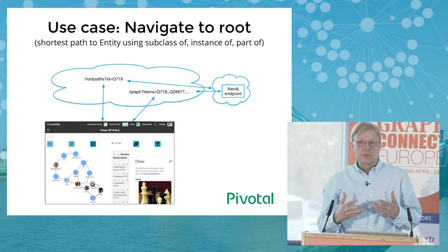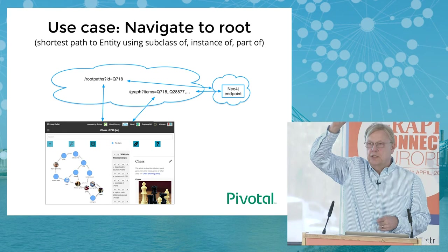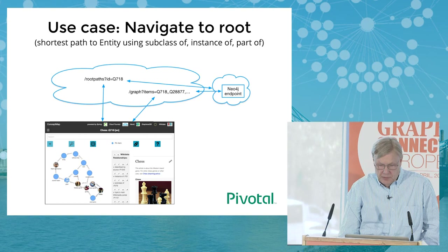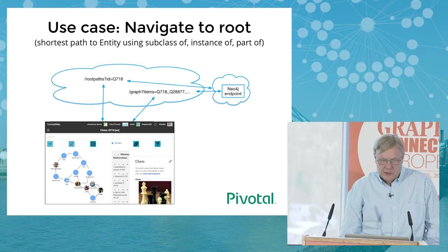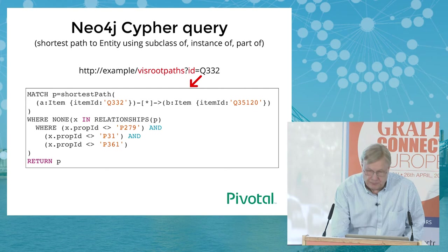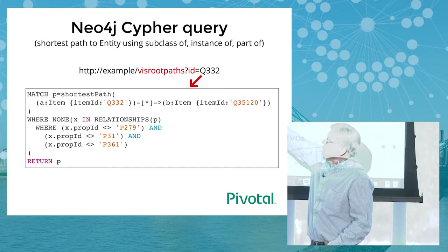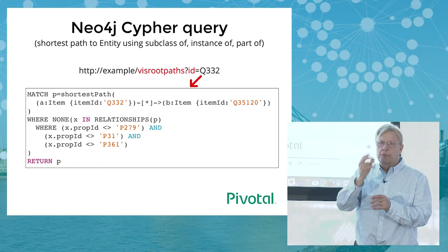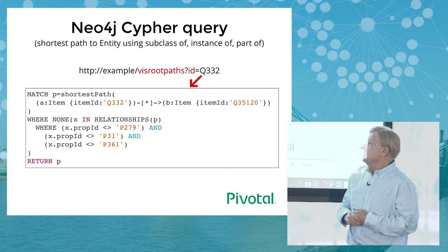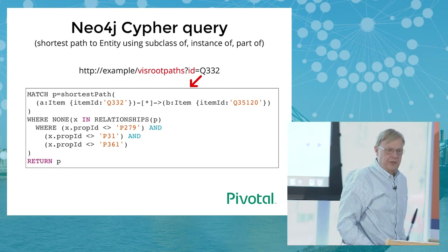The Neo4j Cypher query for 'items in common' runs all shortest paths on the two items passed in, up to two hops. Another operation is 'navigate to root' — Wikidata is hierarchical, with everything eventually relating up to the entity 'entity'. Taking Cristiano Ronaldo and doing a path to root shows: Ronaldo is human, subclass of person, subclass of subject, subclass of entity. The Cypher query runs all shortest paths from the selected item up to entity, filtering on subclass-of, part-of, and instance-of relationships.